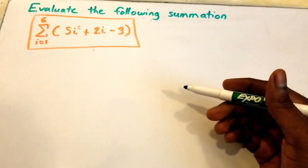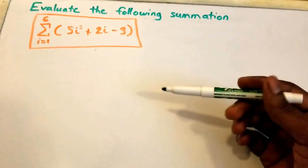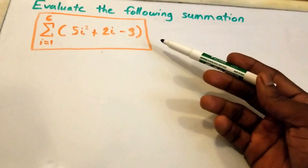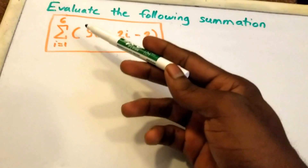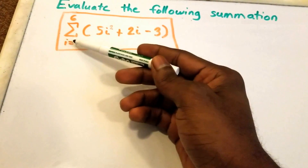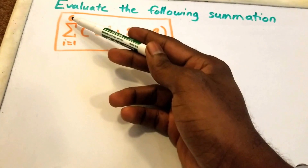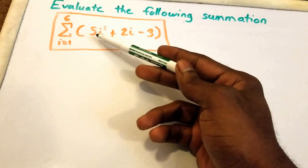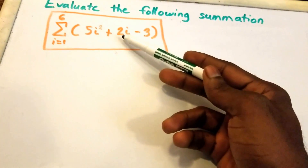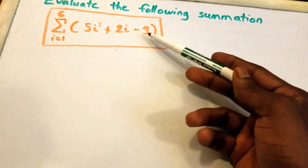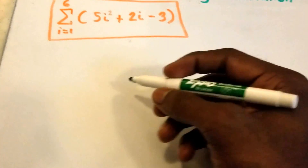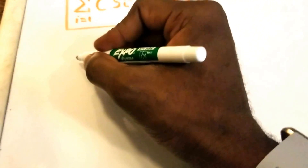Hey guys, welcome to this video on summations. Here we want to evaluate the following summation shown in the orange rectangle. It runs from i equals 1 to 6 of 5 times i squared plus 2 times i minus 3. Let's go ahead and try to solve this summation.